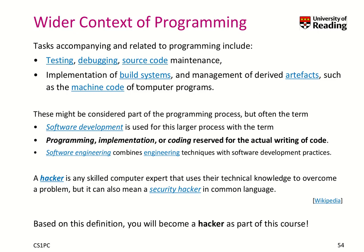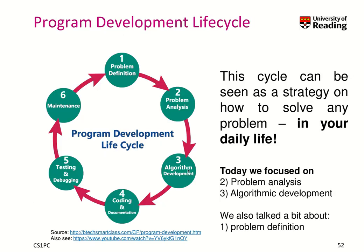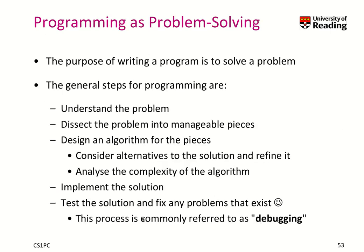There is a wider context to programming. Additional tasks related to programming include testing, debugging, source code maintenance, the implementation of build systems that create executable applications from source code, and management of derived artifacts such as machine code, diagrams, and documentation. The term software development is used to describe this larger process — not just the coding itself, but how we develop. Programming and coding are reserved for the actual writing of code, but we also have to test, debug, maintain, and document.